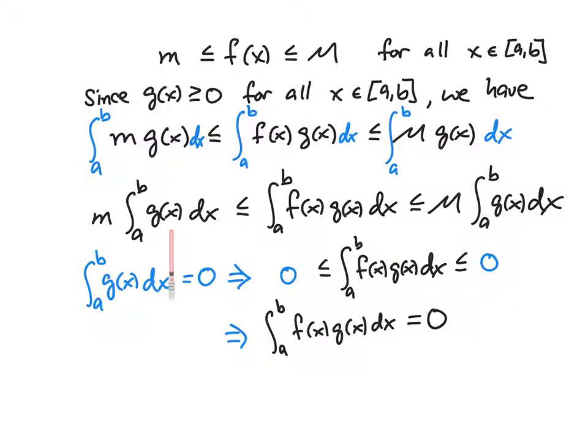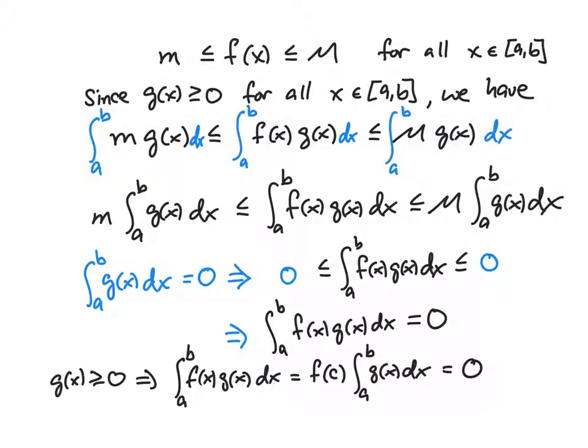Now we have to consider the case: what happens if this integral is equal to zero? If the integral happens to be equal to zero, then this integral with this product in here is bounded by zero on each side, so that just means it's equal to zero. Keep in mind that g(x) is greater than or equal to zero. If g(x) happens to be equal to zero, then there's nothing to prove here—this whole thing is just equal to zero, and that's a trivial case. But if g(x) is greater than zero, then the only way that this integral here is going to equal zero is if there's some place where f actually attains zero.